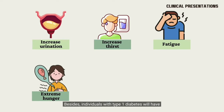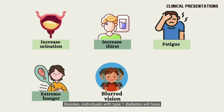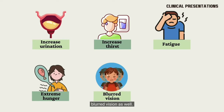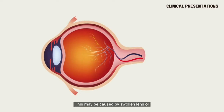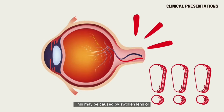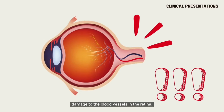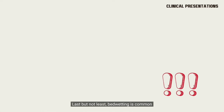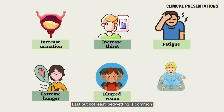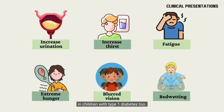Besides, individuals with type 1 diabetes will have blurred vision as well. This may be caused by a swollen lens or damage to the blood vessels in the retina. Last but not least, bedwetting is also common in children with type 1 diabetes.